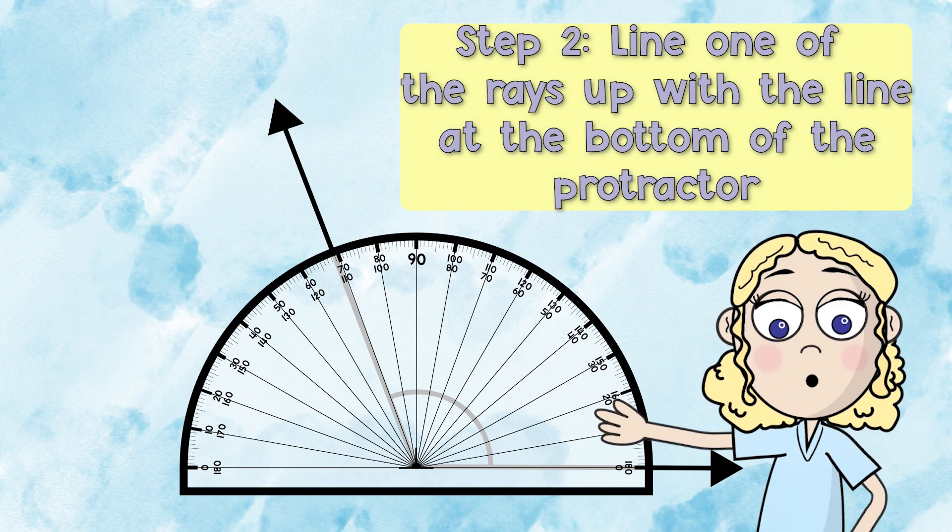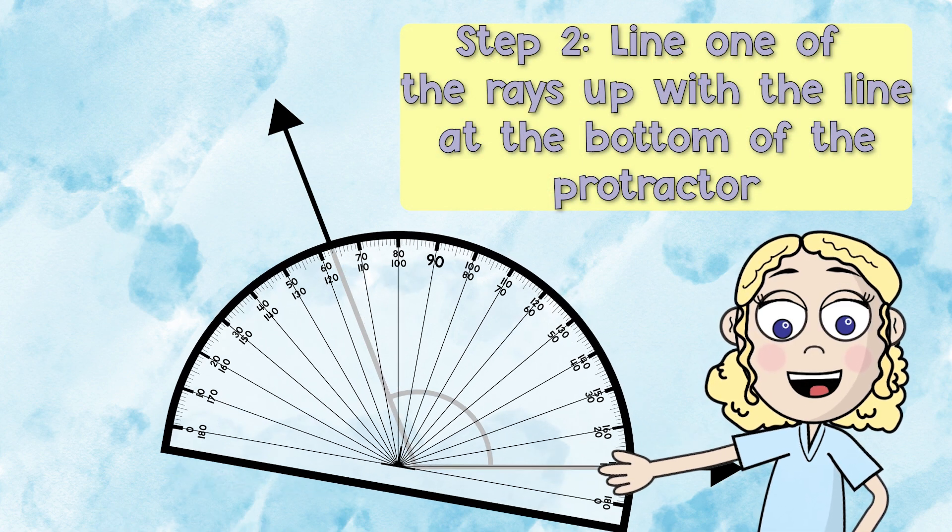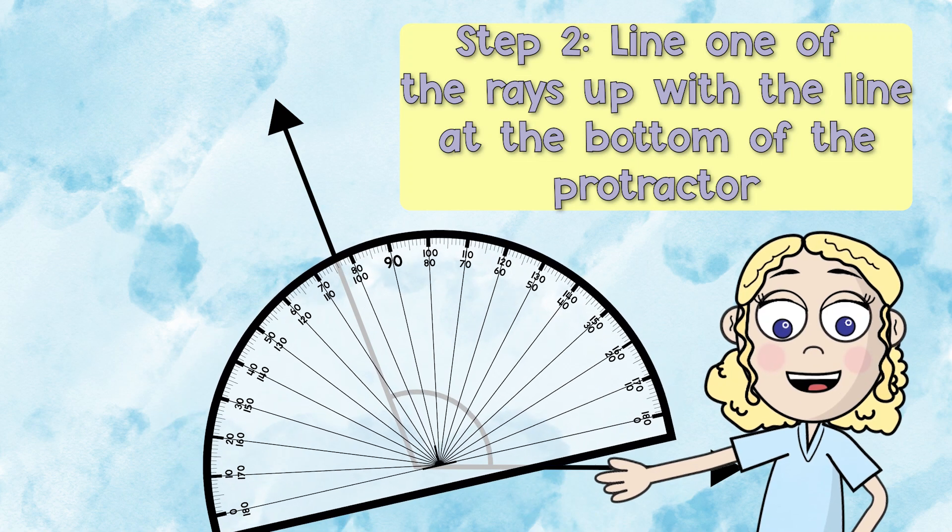Step number two, you will then line up one of the rays with the line on the bottom of the protractor.